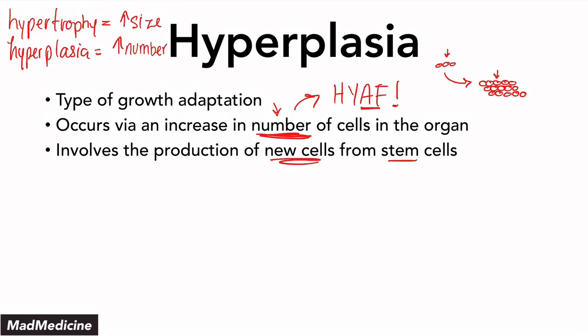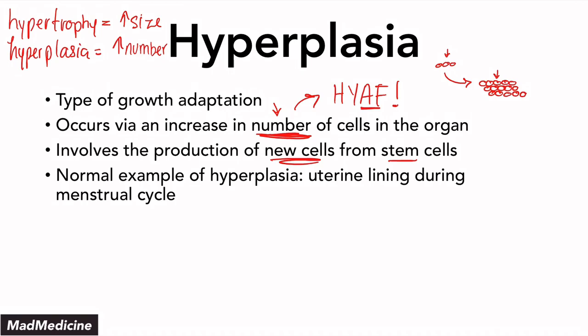There are normal examples of hyperplasia and pathologic examples. A normal example would be the uterine lining during the menstrual cycle. During the menstrual cycle, the uterine lining grows, and toward the end of the cycle when a woman gets her period, the lining sheds and that's when bleeding occurs. The uterine lining builds up because it is undergoing hyperplasia — not hypertrophy. If it were hypertrophy and then shed every cycle, you would have no uterus after a while. Because it's hyperplasia, it's growing the number of cells, and when it sheds, you still have a baseline number of cells to keep the uterine lining normal.